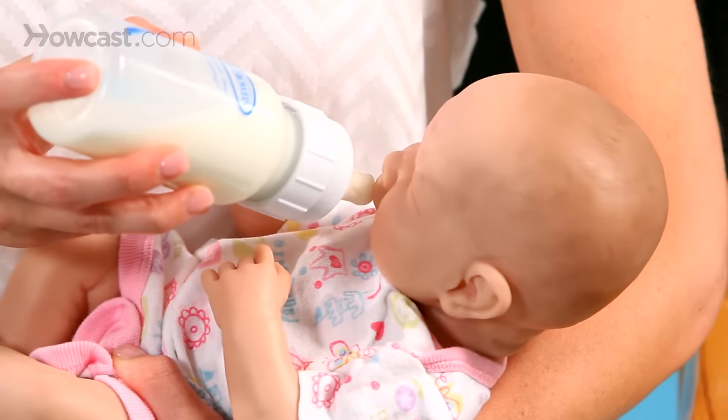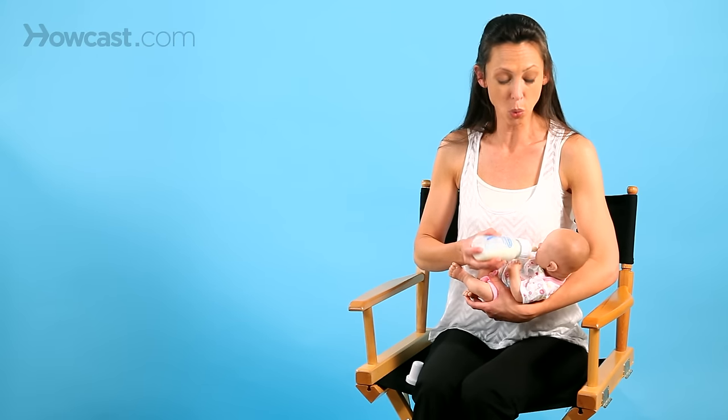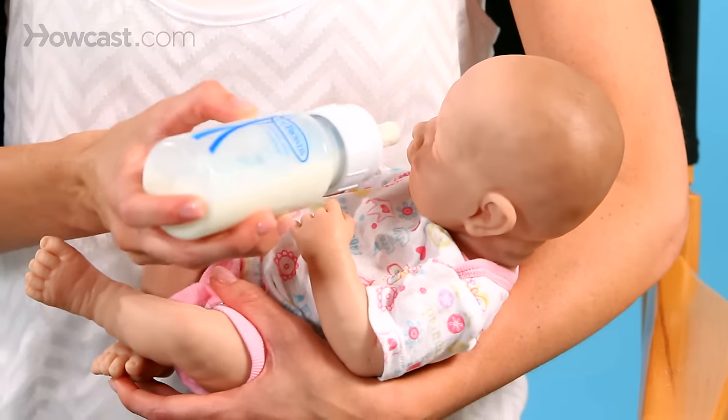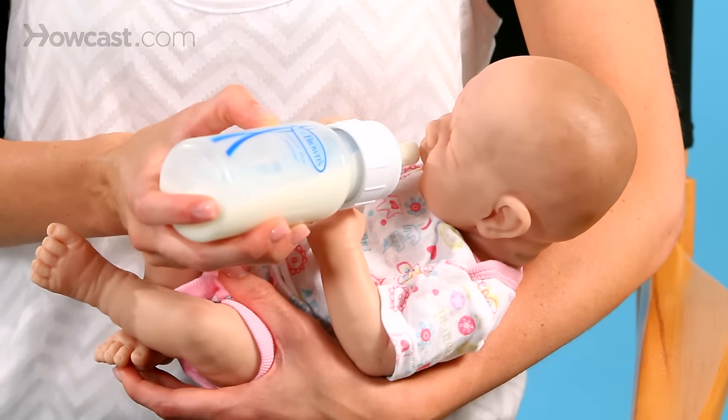Sometimes babies when they're very young will reject the bottle and do a thrusting out motion. The way to help that through is to shake the nipple a little bit in the baby's mouth. Press the nipple to the top of the baby's mouth and eventually they will latch on.